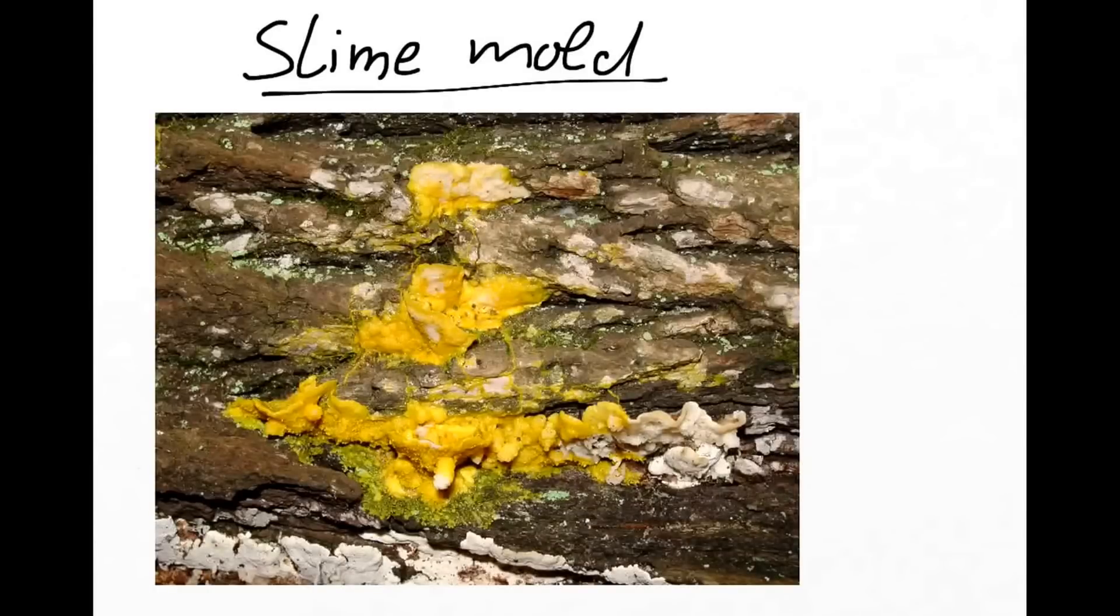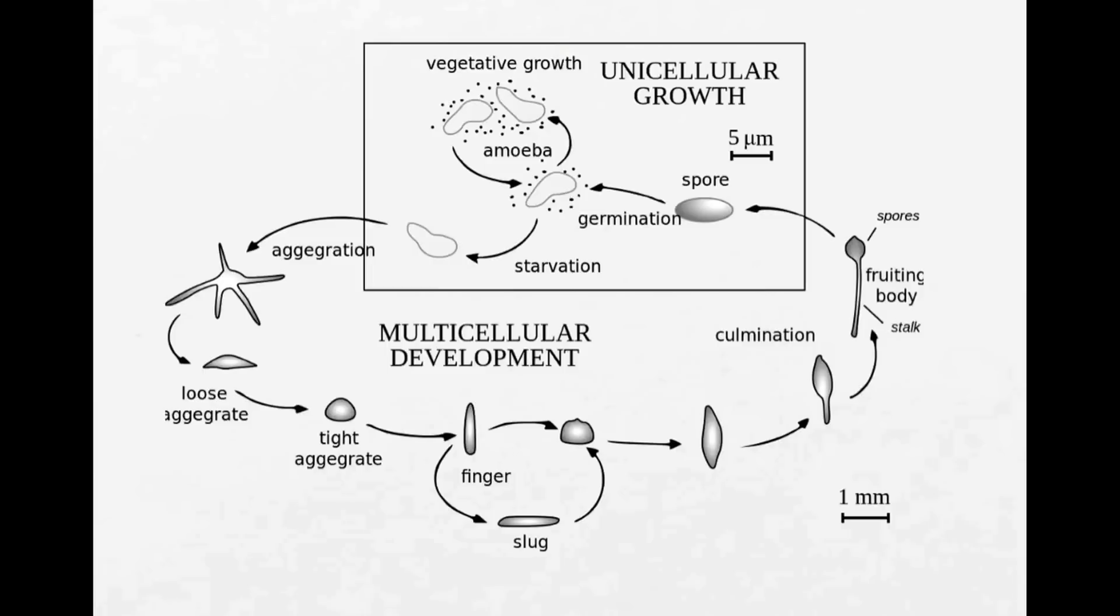This is another organism that we usually don't really notice. It is one form of a slime mold. So how do slime molds actually live? What do they do? They are very important in destroying rotting materials, so they are very important in the food chain. But they have a rather complex life cycle.